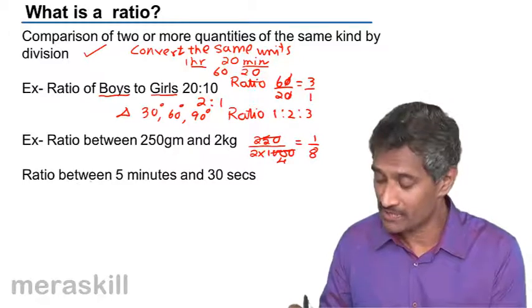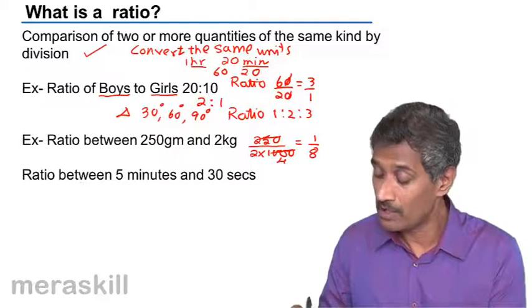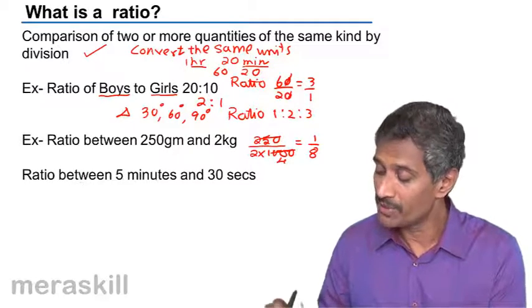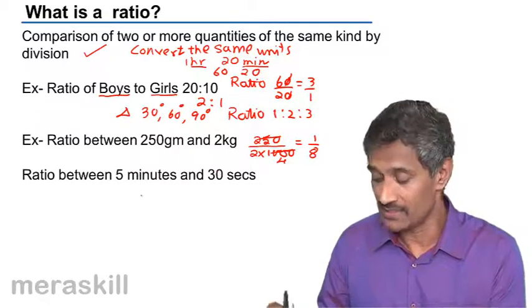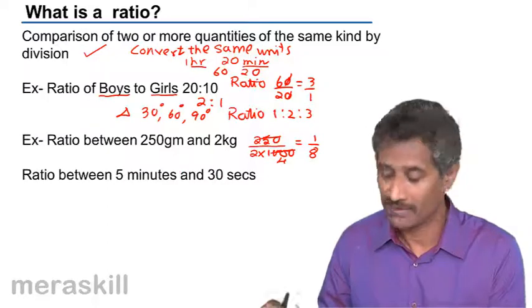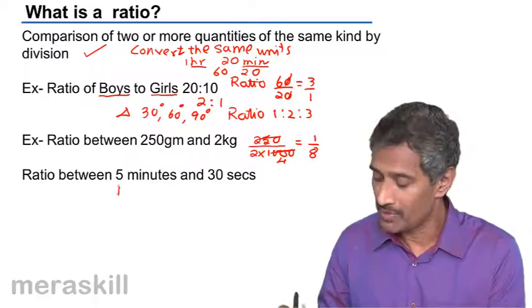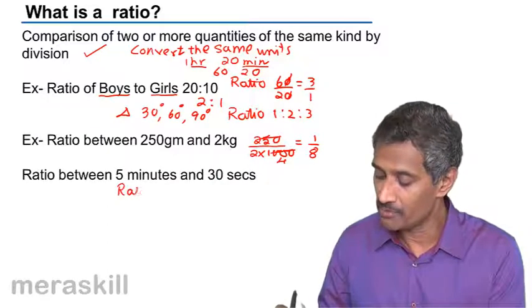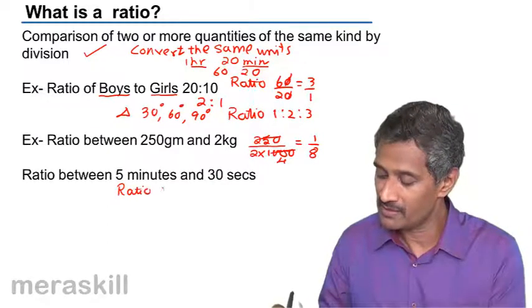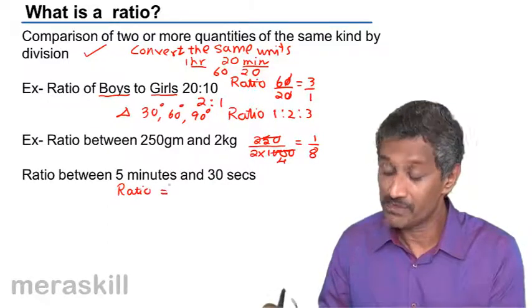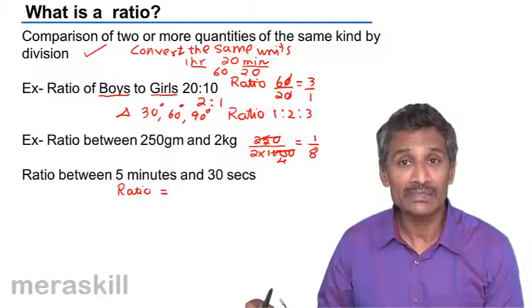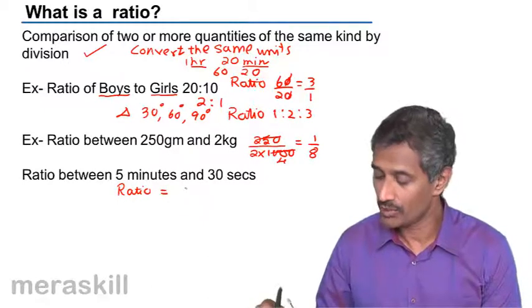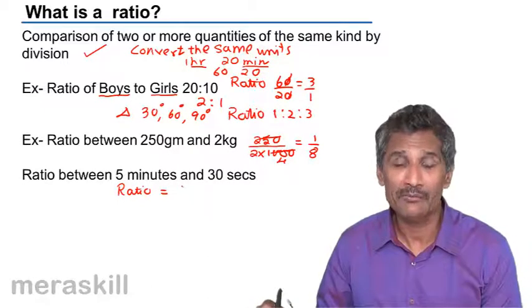Let's take another example: the ratio between 5 minutes and 30 seconds.